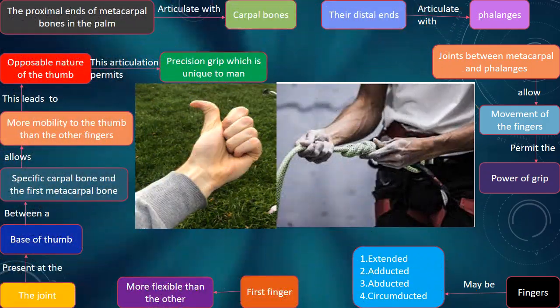The proximal ends of the metacarpal bones in the palm articulate with the carpal bones. Their distal ends articulate with the phalanges. The joints between the metacarpals and phalanges allow the movement of the fingers and permit the power of grip.